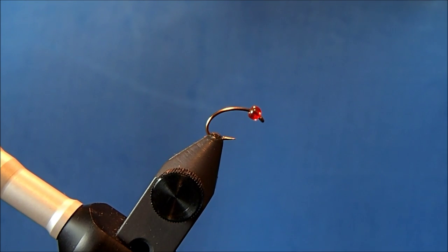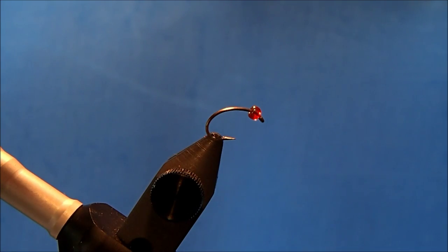I'm going to tie a hurl midge, starting with a size 16 scud hook on the vise. I've got a glass bead already on, and as the name implies, I'll be tying this with stripped hurl.